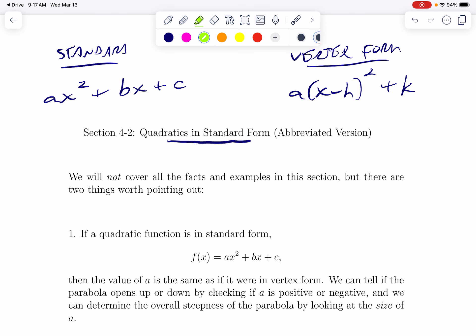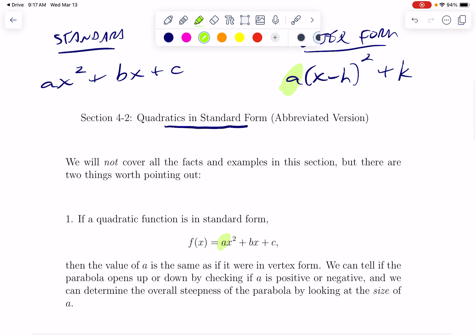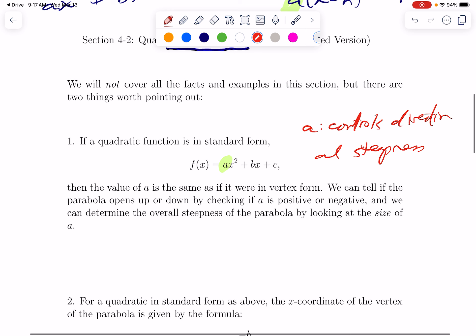This value of a here is the same as the value of a would be in vertex form. If a is positive, the parabola opens up. If a is negative, the parabola opens down. If a is bigger than 1 in absolute value, we have a parabola that is steeper than the standard x squared. If a is smaller than 1 in absolute value, we have something that's less steep.